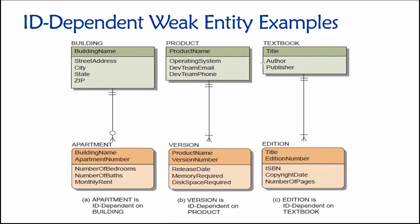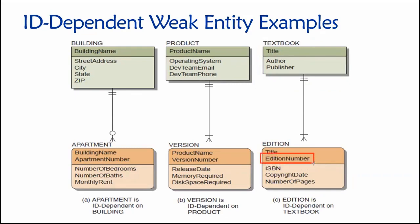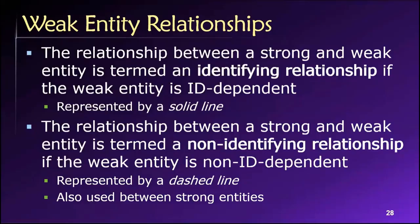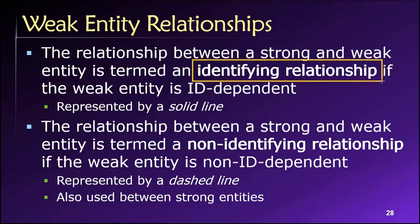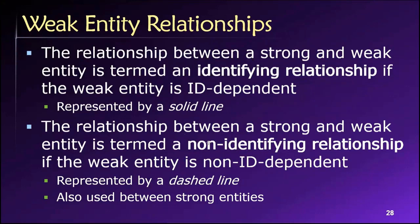These are all ID-dependent weak entities because part of the primary key must be the primary key from the parent strong entity table. If we have an ID-dependent relationship between a strong entity and a weak entity, we call that an identifying relationship. Non-identifying relationships between strong and weak entities are those that are non-ID-dependent.